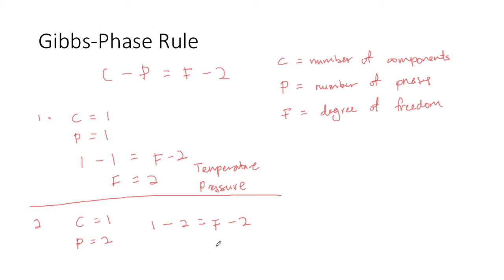And thus the equation would be 1 minus 2 equals F minus 2, which would give us F equals 1, which means that only one property needs to be fixed to make the system constant. So it could be either temperature or pressure.